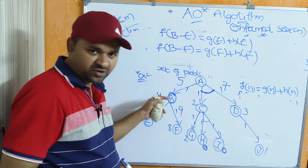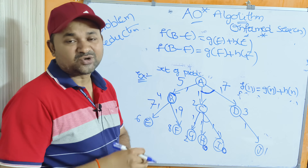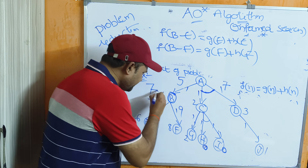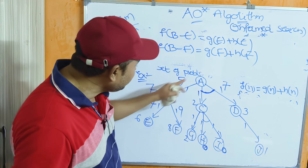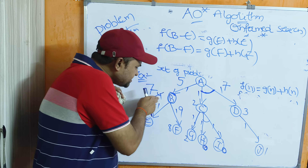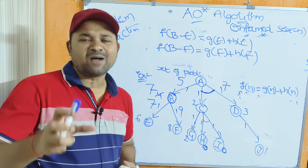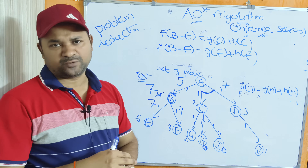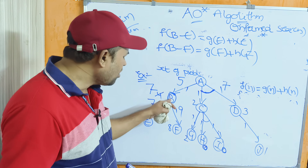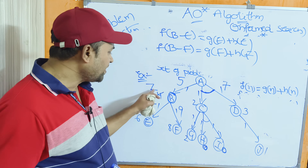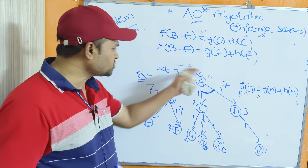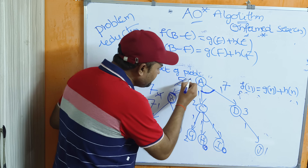Since 7 is the best value, we replace B's heuristic function (previously 4) with 7. Now we need to back-propagate this updated information to B's parent node A. So F(A→B) = G(B) + H(B) = 1 + 7 = 8. After determining this cost, we back-propagate it to the parent node.